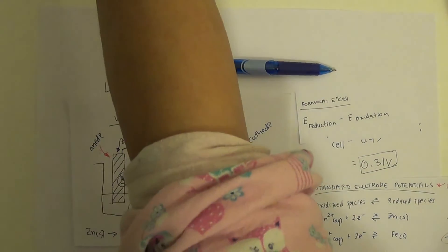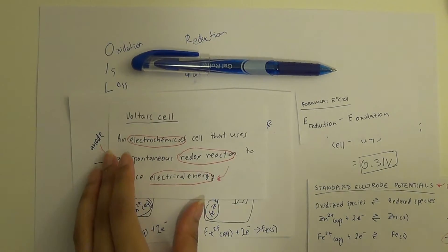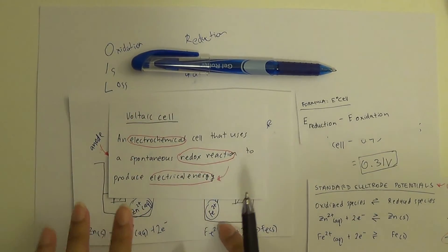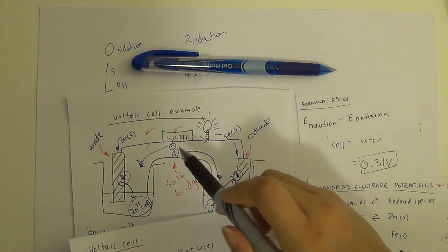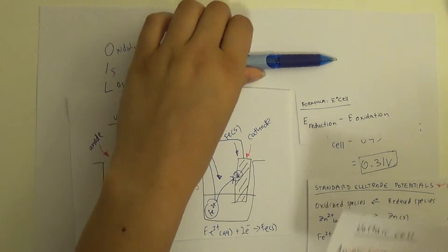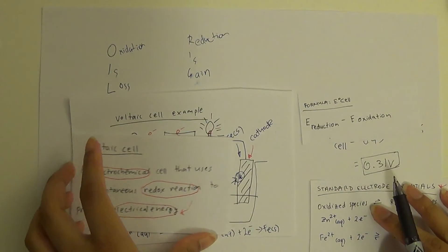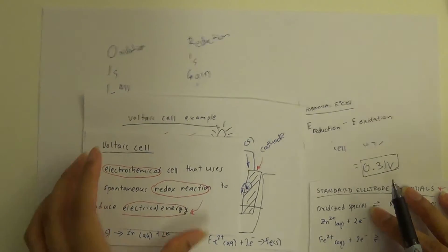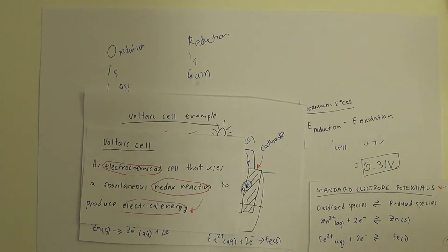That is how you construct a voltaic cell, using spontaneous redox reactions in each cell to produce electrical energy. That's the first of two redox cells — the second is an electrolytic cell, and we'll have a look at that in the next video. Thanks for watching, and leave any comments below if you have any questions.